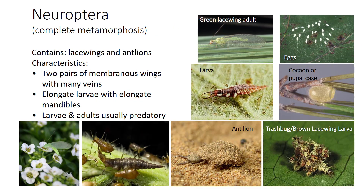Neuroptera means nerve wing, containing the lacewings and antlions. They have two pairs of membranous wings with many veins. The larvae are well known as predators with their elongate bodies and mandibles, feeding on many types of soft-bodied insects. Both the adults and larvae are usually predatory, although some species may feed on nectar or pollen. If you find eggs on stalks, then you know that you will have lacewings on the way. Some larvae like to be undercover, like the trash bugs with their walking garbage heap, and antlions that bury themselves waiting for prey.